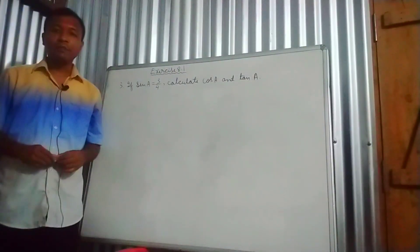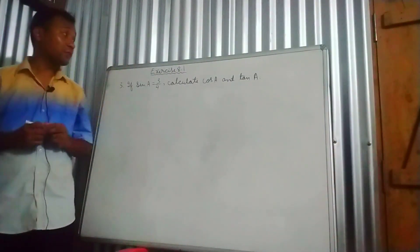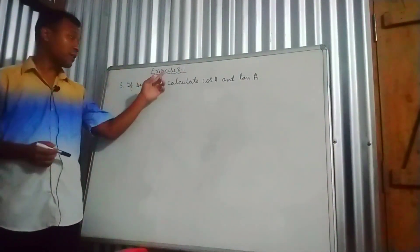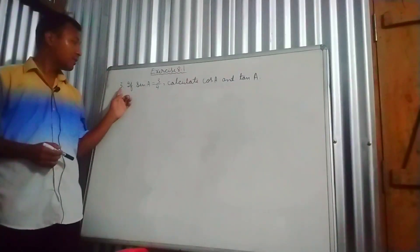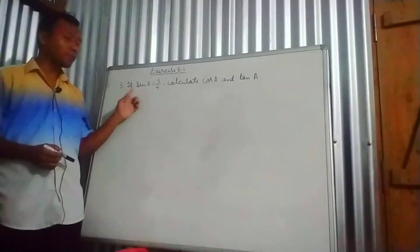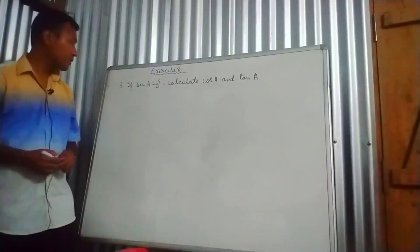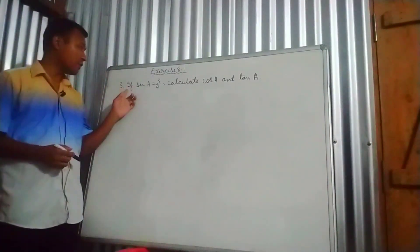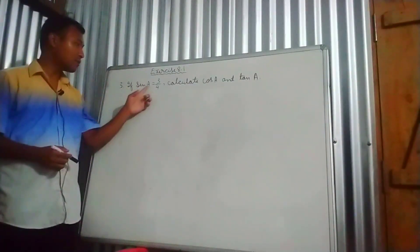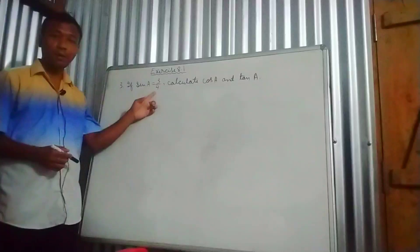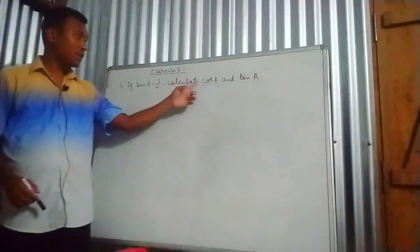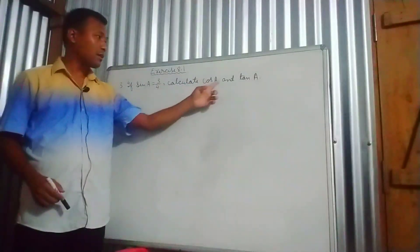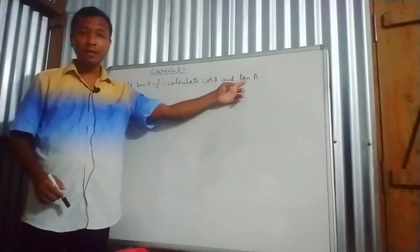Hello everyone, this is the video. This is Exercise 8.1, equation number 3. It says if sin A is equal to 3 by 4, calculate cos A and tan A.